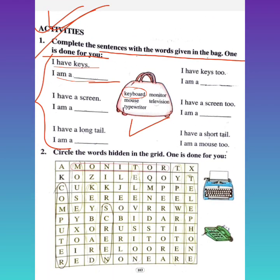Next, I have a screen. I am a monitor. This is a monitor. Next, I have a long tail. This is a mouse. The mouse is connected to the table. You can see the mouse.